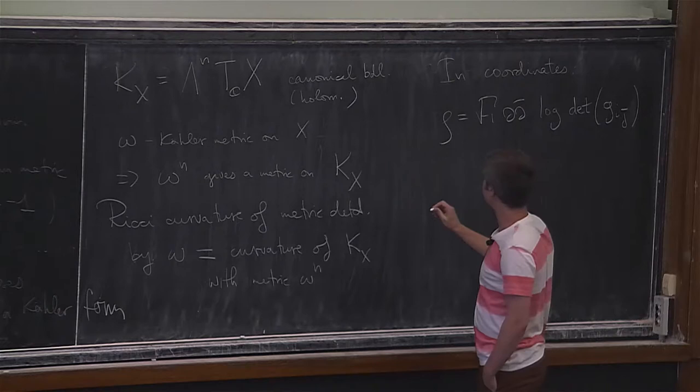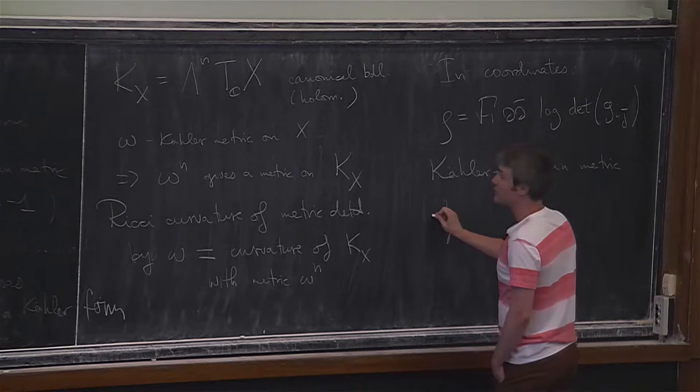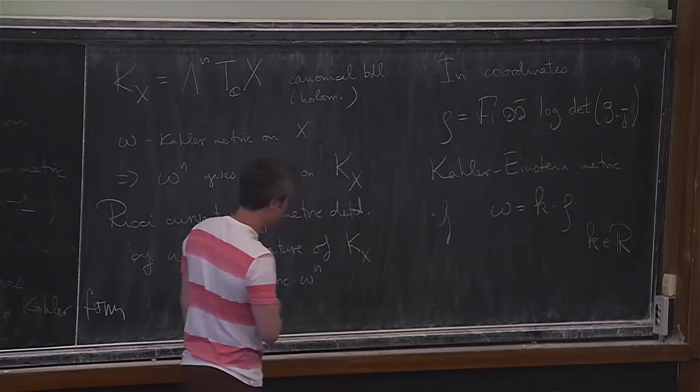Locally, omega and rho can be compared. You say that you have a Kähler-Einstein metric if omega equals k times rho, where k is some real number.